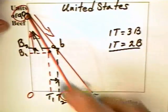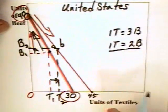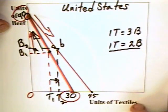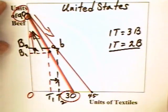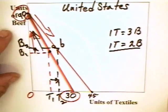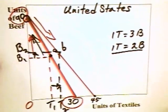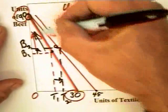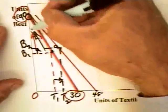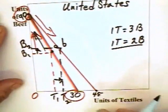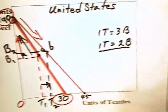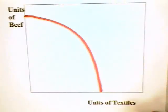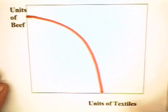However, total specialization in one product is not likely to be the case in a typical economy, and the reason is that in a usual economy the production possibility curve is not a straight line. There is such a thing as increasing cost of production, and we can see this in the graph.